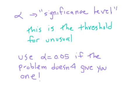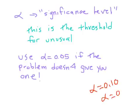One last vocabulary item: our book talks about something called alpha — it looks like a lowercase 'a' in Greek. This stands for the significance level, which is just a fancy way of saying it's the threshold for what we mean by 'unusual.' All year we've been using an alpha value of five percent. We'll use alpha as 0.05 if they don't give us one. Every once in a while a problem will say alpha is ten percent or one percent — if they do that, that's your threshold for what it means to be unusual, and you should use that.